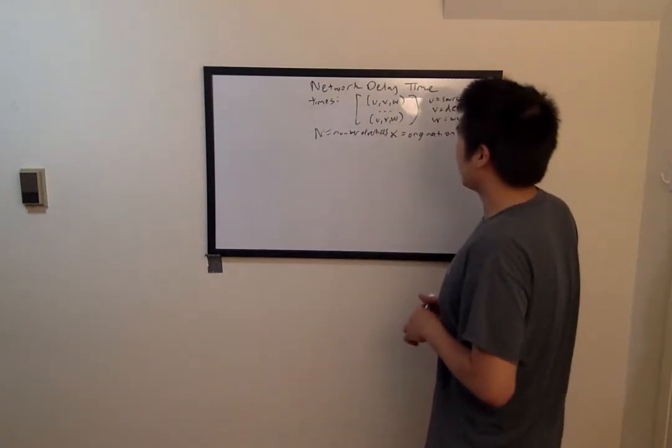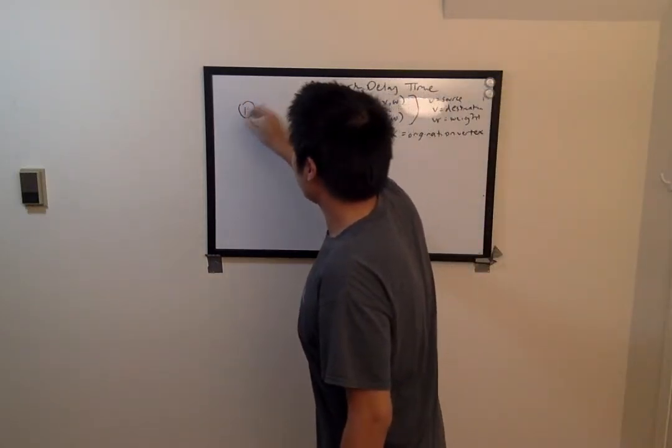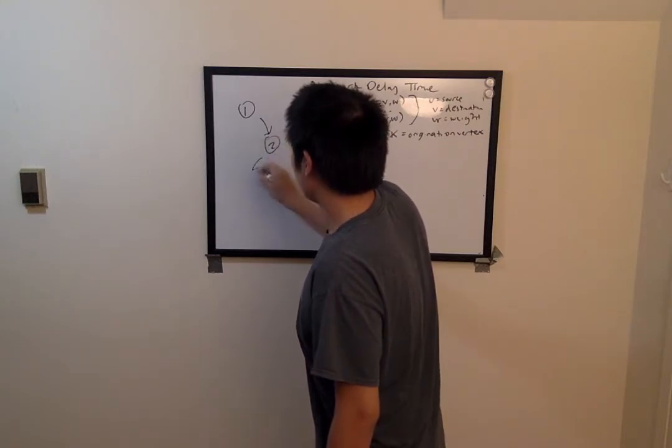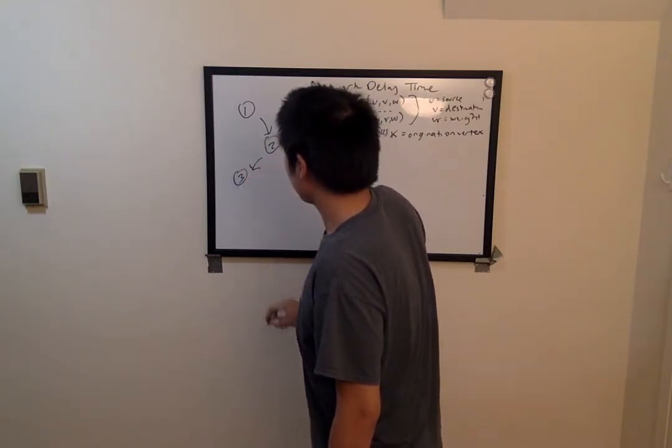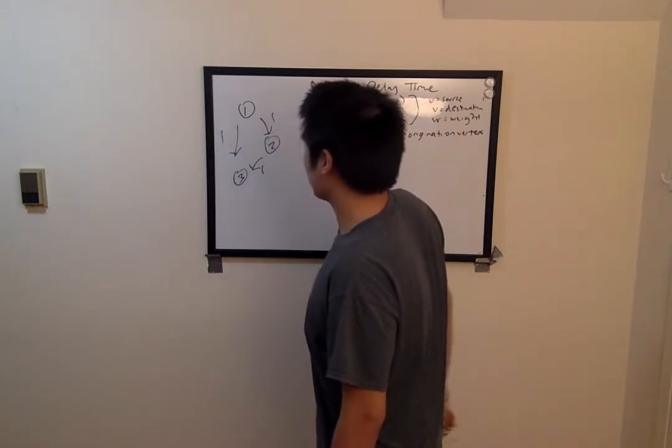So as an example, you could have a graph like this, where you have vertex 1 going to vertex 2, and then vertex 3. And each of these edge weights is 1.